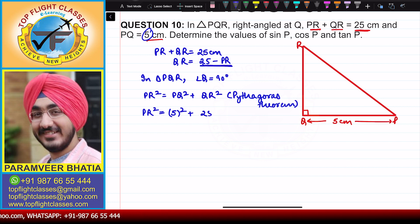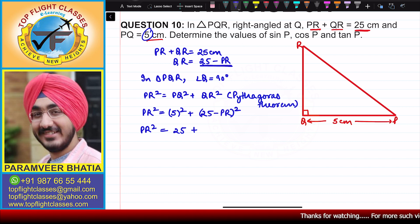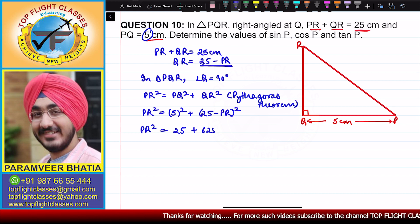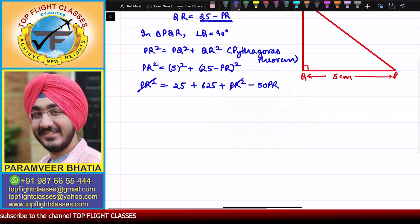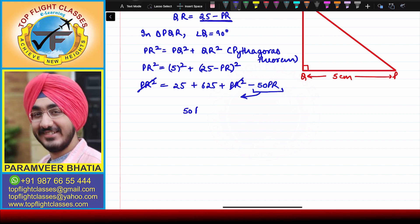Substituting, PR squared equals 25 plus (25 minus PR) whole squared. Expanding using (A minus B) squared equals A squared plus B squared minus 2AB, we get PR squared equals 25 plus 625 plus PR squared minus 2 times 25 times PR, which gives PR squared equals 25 plus 625 plus PR squared minus 50 PR.